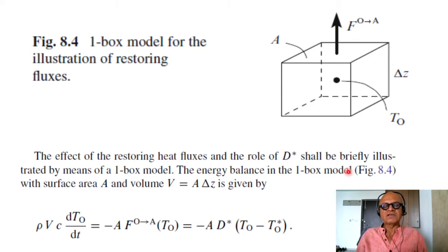So the effect of restoring heat fluxes and the role of D star that we reduced to an exchange coefficient similar to a sensible heat flux based on the difference of the ocean and atmosphere temperatures can be illustrated here with this one box model.